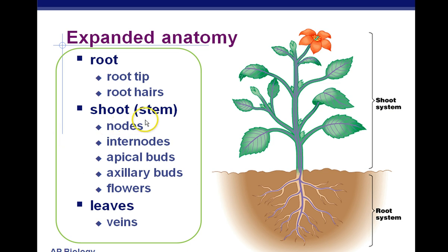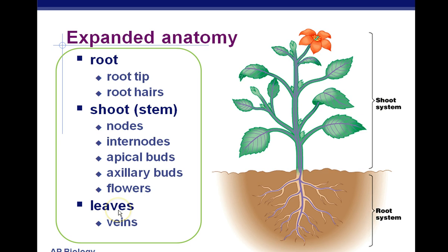The shoot is also called the stem — those words are used interchangeably. There are nodes, internodes, apical buds (which means at the tips), axillary buds on the sides, and flowers that we'll talk about in detail. The leaves have veins in them, which are used for transport of sugars, water, and minerals.